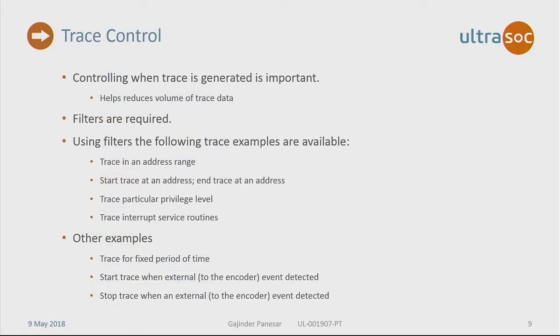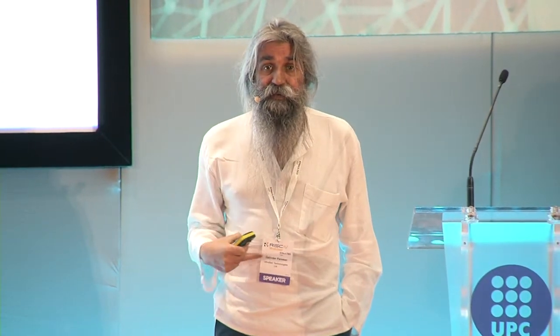Even compressed branch traces can flood the system, so there is a need for controlling how much bandwidth and how much trace you get and hence the traffic you get off chip — therefore you need some sort of filtering. Filtering can be trace in an address range, start or stop when you hit an address, trace just the privilege levels, or trace just interrupt service routines. Or you can do tracing in fixed periods of time, start tracing when you get an event from some other module on chip, or stop tracing when another module indicates an event.